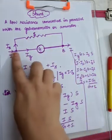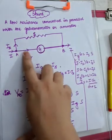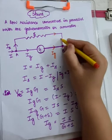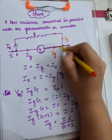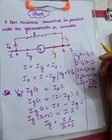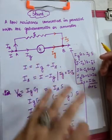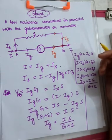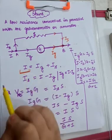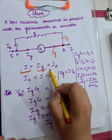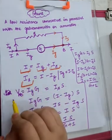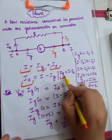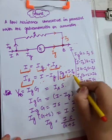So IS flows through the shunt and IG flows through the galvanometer. When these currents move further, IG and IS combine at a certain point so that the total current I is regenerated. The galvanometer did not experience the full current, so it is protected from damage. Total current I is divided into two parts: IG plus IS. Therefore, IS equals I minus IG, and IG equals I minus IS.